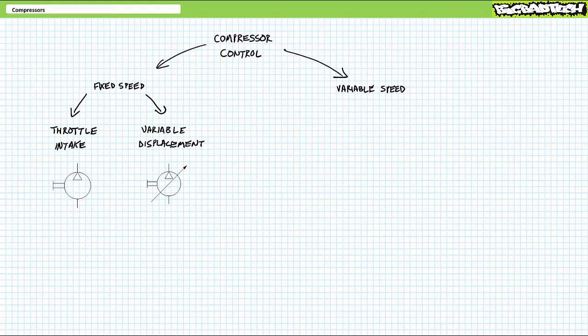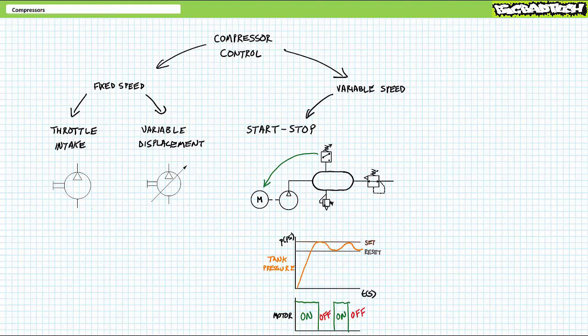Let's now examine some variable speed compressor control methods. One simple variable speed compressor control method is to start the compressor when you need it and stop it when you don't. Viewers will recall we examined start-stop compressor control in the Air Preparation Elements and Pneumatic Systems lecture, available at the Big Bad Tech Channel.